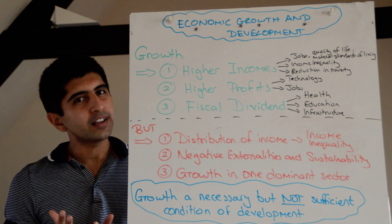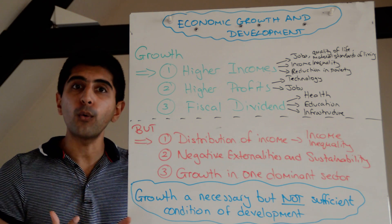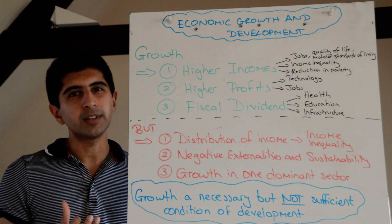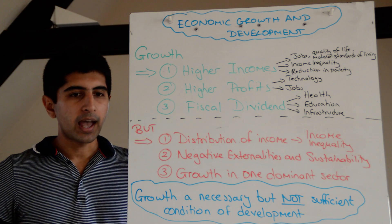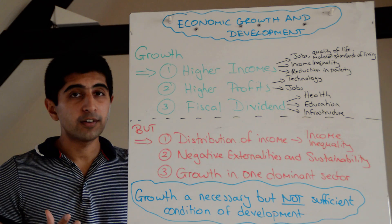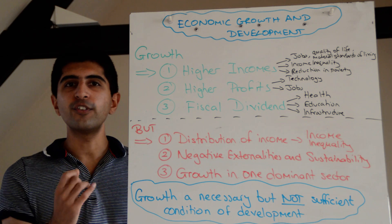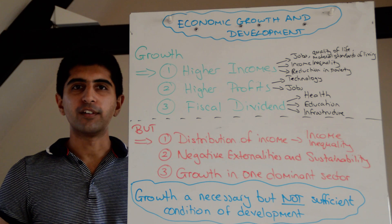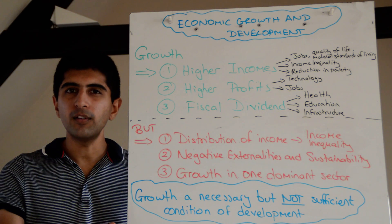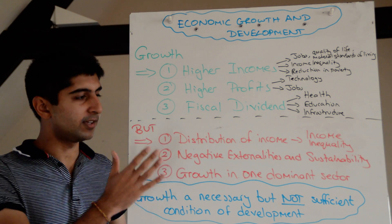A third limitation is where growth is actually taking place. If growth is concentrated in one dominant sector, there is no guarantee it will benefit the whole of society. A great example is Nigeria, an economy that's very oil-dependent. As a result of growth from the oil sector, incomes in that sector are not distributed to the rest of the economy — it's just those involved in the oil sector who benefit. So growth in one dominant sector is not necessarily going to lead to development in the rest of the economy.